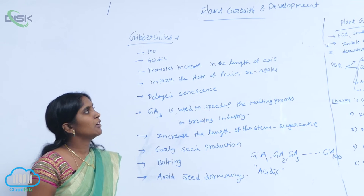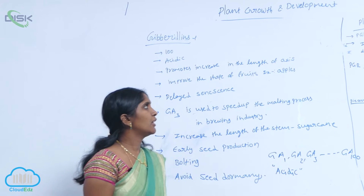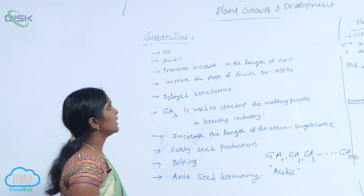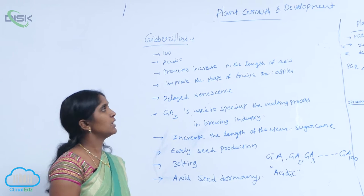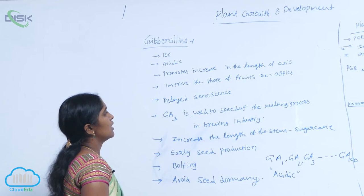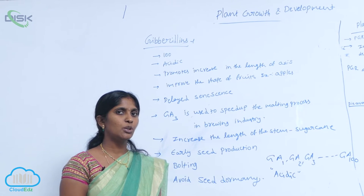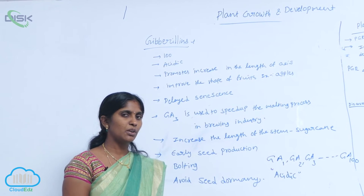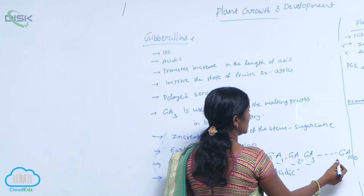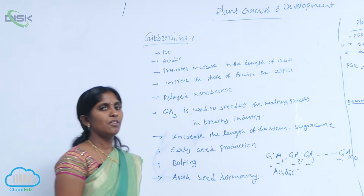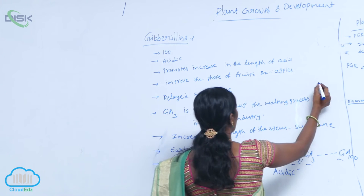Gibberellins are another kind of plant growth hormones. More than 100 types of gibberellins have been isolated from different plant sources. Basically they are acidic in nature. They are denoted as GA1 to GA100, like GA1, GA2, GA3, GA100. The first isolated gibberellin form is GA3.